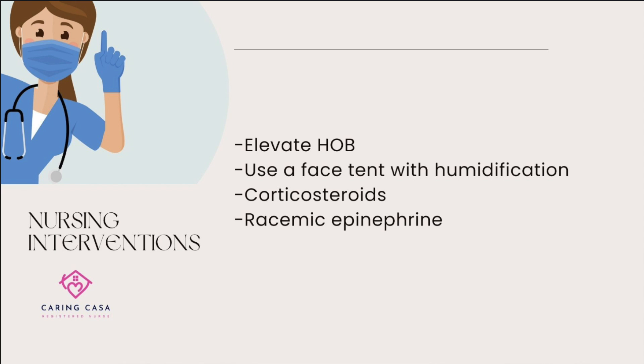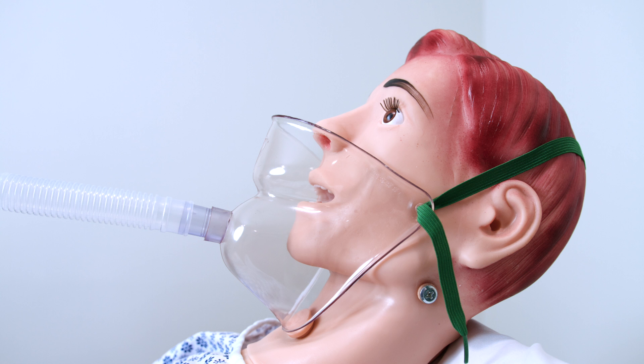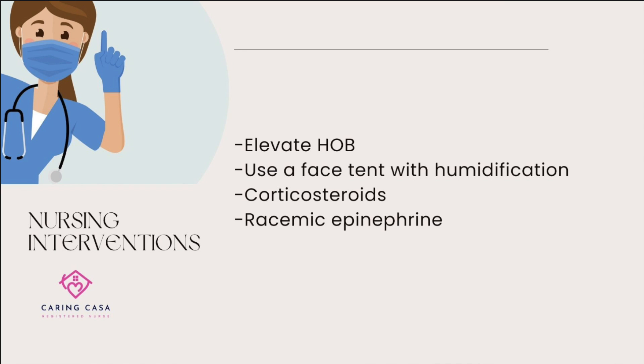Stridor can occur from partial larynx or tracheal obstruction, or from inflammation or croup. Interventions to consider: elevate the head of the bed, avoid hyperextending the neck and position in alignment to avoid obstruction of the larynx, use a face tent with active humidification — which is key — and administer corticosteroids per MD orders. If no change, consider racemic epi with prompt evaluation from respiratory therapy and the healthcare provider.